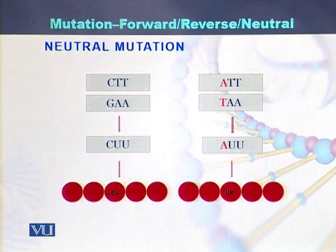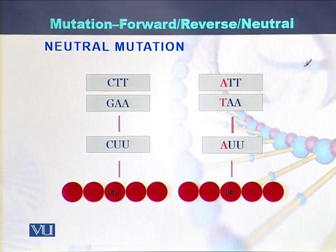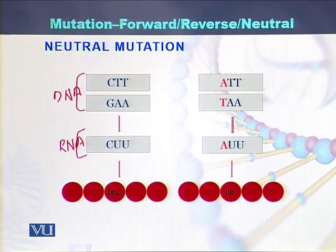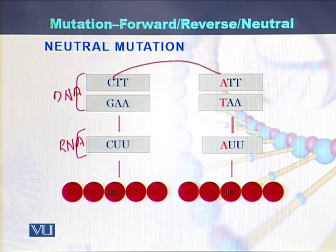Look into this diagram — we can see what neutral mutation is. This is the genomic sequence, that is the DNA sequence, and this is the RNA sequence. If we see that there is a change in the genomic sequence — instead of C, there is A — the sequence has been changed in that codon. Because C is converted into A, at the RNA level it is now AUU instead of CUU.